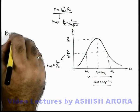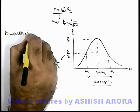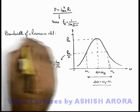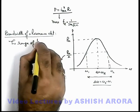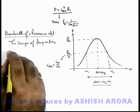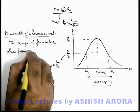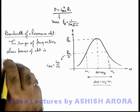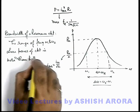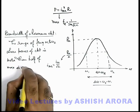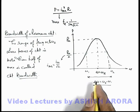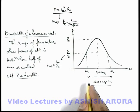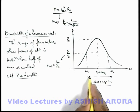This range is defined as the bandwidth of the resonating circuit. In the case of a series RLC circuit, we define the range of frequencies from omega_1 to omega_2, where the power of the circuit is more than half of the maximum, as the circuit bandwidth. The application of this bandwidth will be seen when we study the topic of communications and the transmission of signals over higher carrier frequencies — we will study what role these bandwidths play in a specific circuit.